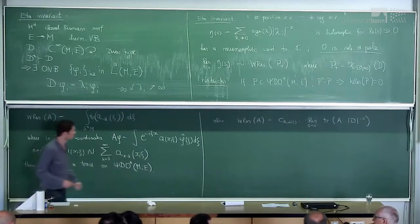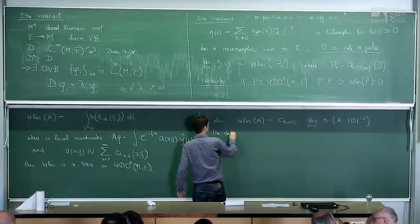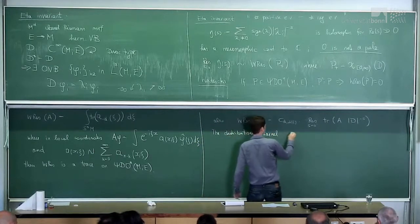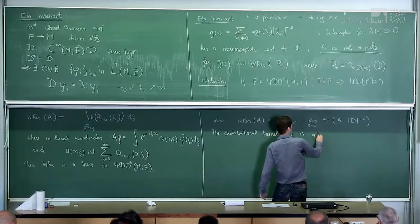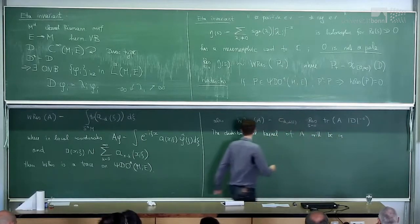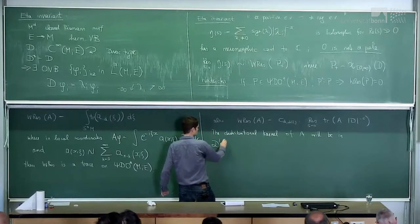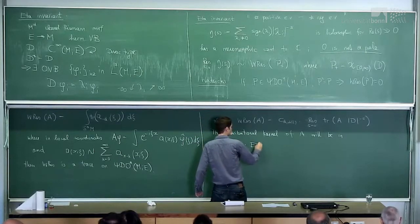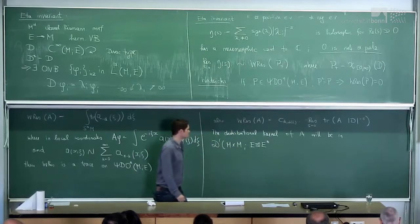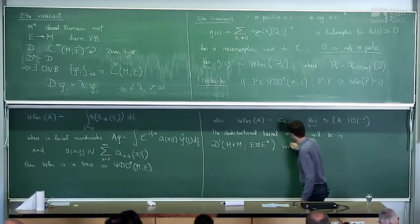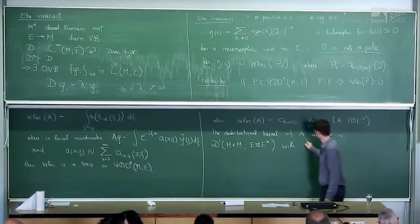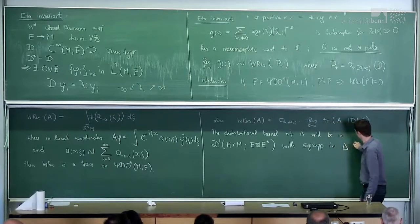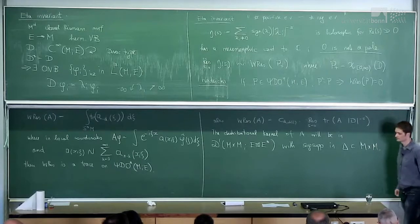The distributional kernel of A is a distribution on M cross M with values in the bundle E box-tensor E-star. Its singular support is on the diagonal because of pseudo-locality.